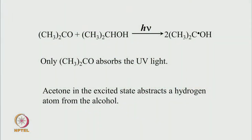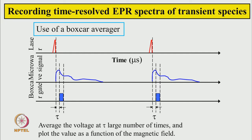This is the overall reaction: acetone is excited by the light and it abstracts a hydrogen atom from the alcohol. To get the EPR spectrum of this radical just at the time they are created by laser light, we have a pulse laser which is repeated again and again as we look at the microwave signal and try to get a snapshot of the voltage at a given time after the laser pulse. We average this voltage after every laser pulse to improve the signal-to-noise ratio using a boxcar averager.